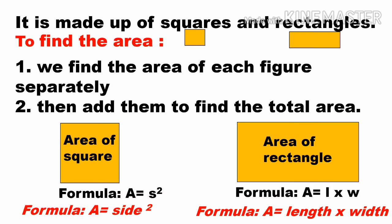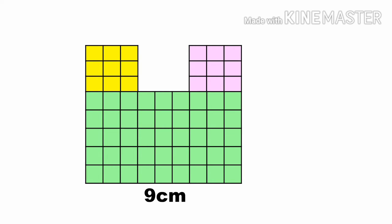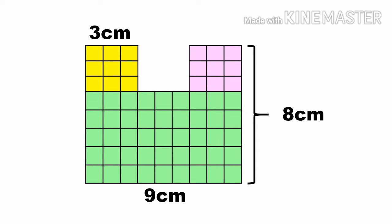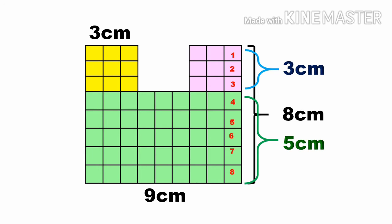This is our irregular figure. One side measures nine centimeters, another side is three centimeters, and another side is eight centimeters. Counting the units, we get eight units along one side and three centimeters on another, giving us a remaining segment of five centimeters.